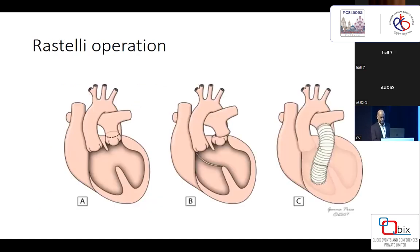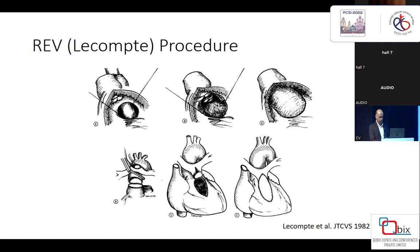Briefly, in the Rastelli procedure, there is a long intraventricular tunnel, nothing is done to the conus, and there is an RV-to-PA conduit. Several modifications have come in to improve long-term outcomes. REV was proposed to eliminate the RV-to-PA conduit — a conduit-less repair — along with resection of the subaortic conus, thinking that would solve both LVOT and RVOT problems.